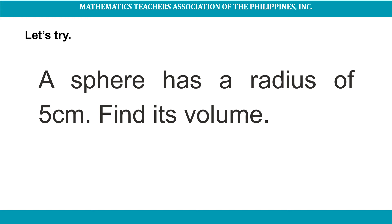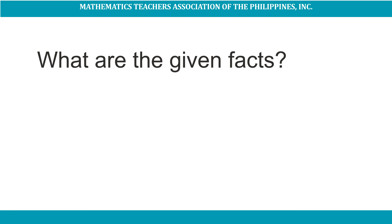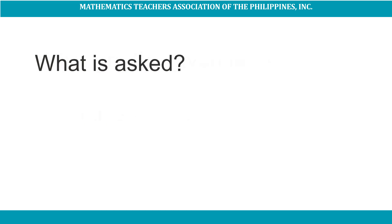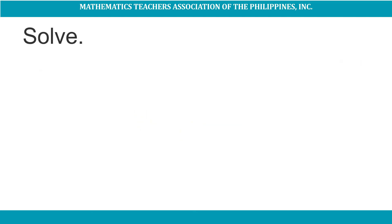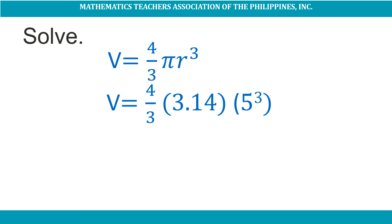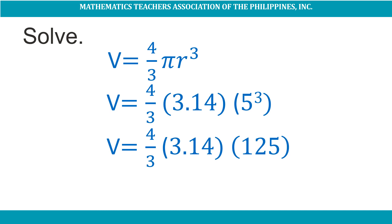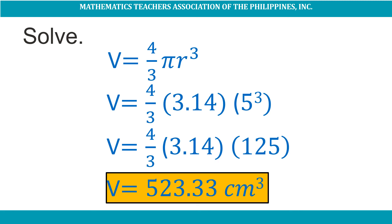For our fourth problem, a sphere has a radius of 5 centimeters. Find its volume. The given fact is radius = 5 centimeters. We are asked to find the volume of the sphere using the formula V = (4/3)πr³. V = (4/3) × 3.14 × 5³ = (4/3) × 3.14 × 125. So the volume of the sphere is 523.33 cubic centimeters.